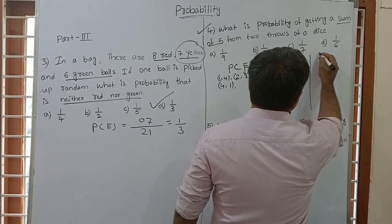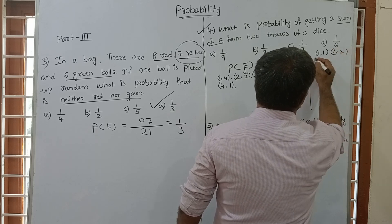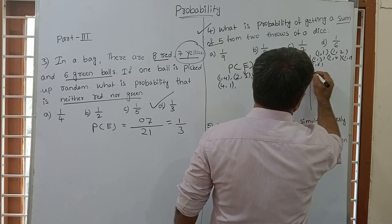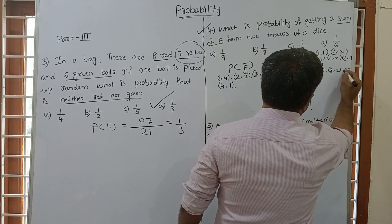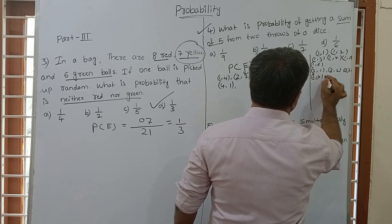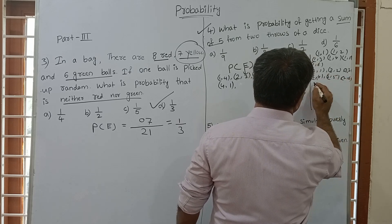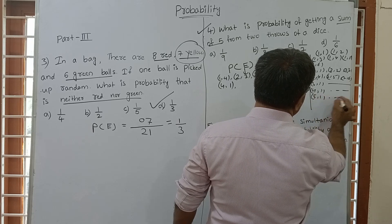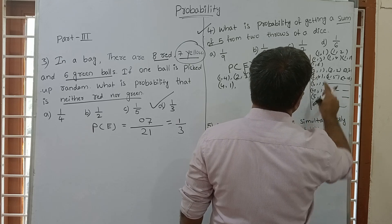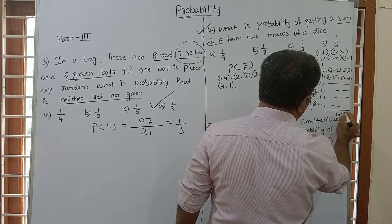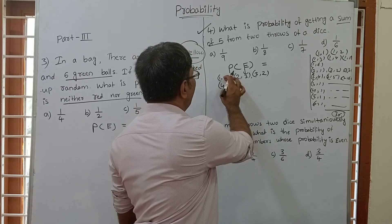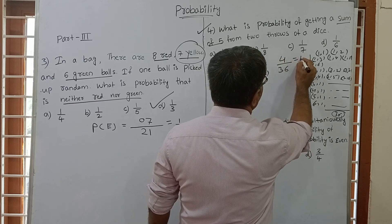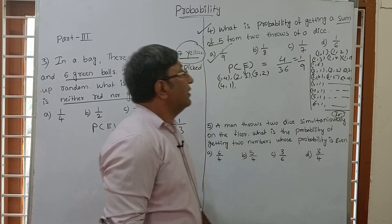The total is 36 outcomes. Favourable outcomes with sum 5: (1,4), (2,3), (3,2), (4,1) — that is 4 outcomes. So probability is 4 by 36, which simplifies to 1 by 9. Our correct answer is 1 by 9.